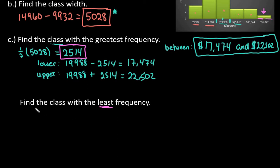In order to find this one, our lower, we would take the midpoint of this class, which is 35,072, and we would subtract the 2,514, which gives us 32,558.